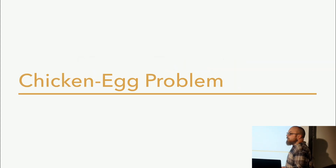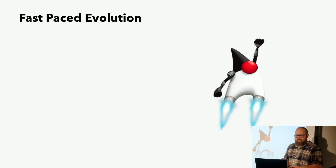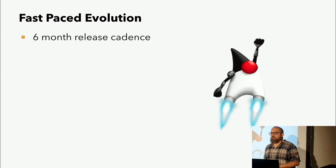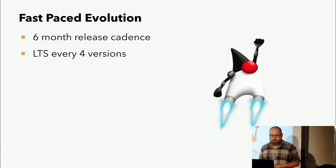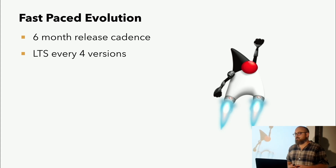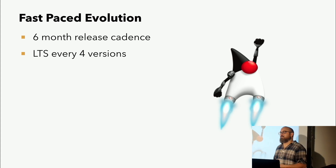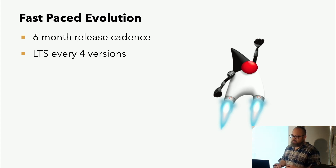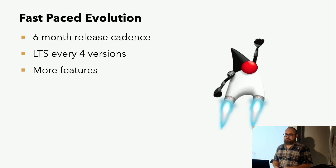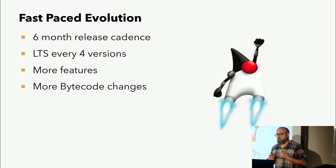Nun ja, deswegen sind wir hier, wegen dem Henne-Ei-Problem. Um besser zu verstehen, woher das kommt, müssen wir einen Blick auf Java und das JDK werfen. Seit Version 9 entwickelt sich Java rasant weiter. Alle sechs Monate gibt es eine neue Version und Oracle zieht das hart durch. Alle vier Versionen gibt es eine neue LTS-Version. Features warten nicht mehr auf LTS-Versionen, sondern kommen raus, wenn sie wirklich fertig sind. Das bedeutet letztendlich, wenn man ein Programm oder eine Library hat und die neueste LTS-Version unterstützen möchte, muss man das plötzlich alle 24 Monate tun. Und es kommen immer mehr Features – im Durchschnitt inzwischen zwölf JEPs in einem Release. Das bedeutet natürlich auch viel mehr Bytecode-Changes.